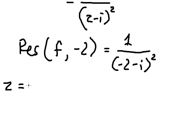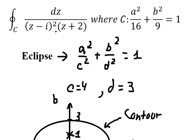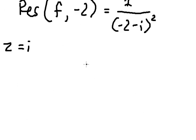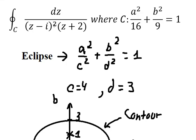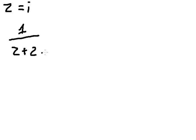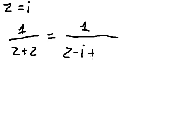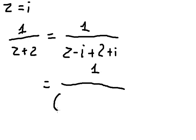The next pole is z equals i. We see that we have a power of two here, so this is a second-order pole. In this situation, we need to create a factor to eliminate the power two. We put negative i in here and then put back positive i. Now we can do factorization by (2 + i).